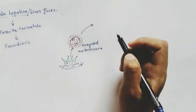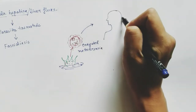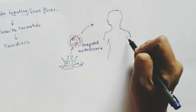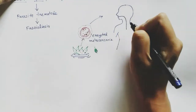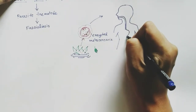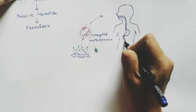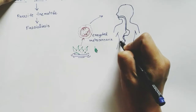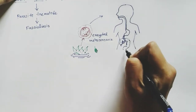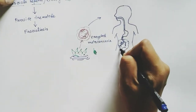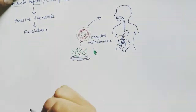When an animal such as a human or other cattle consumes water plants, the cyst of Fasciola hepatica — the encysted metacercaria — enters through the mouth and goes through the gastrointestinal tract. It travels from the mouth, through the stomach, and reaches the small intestine.